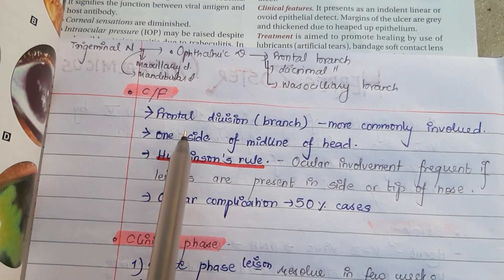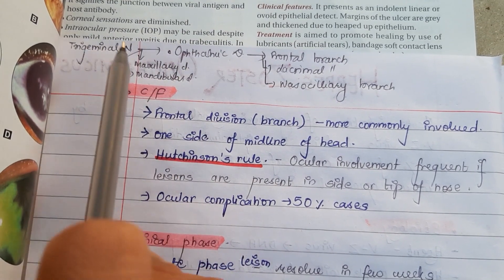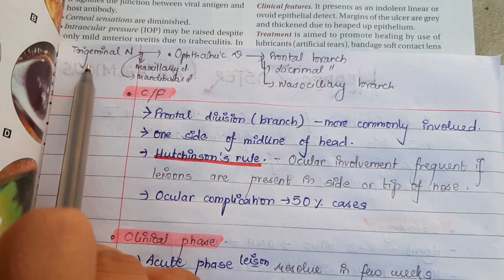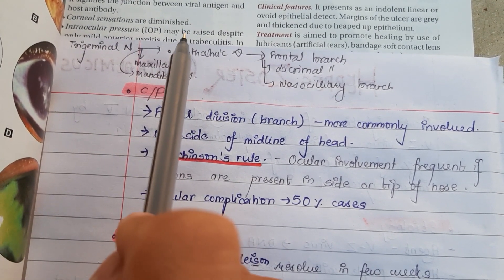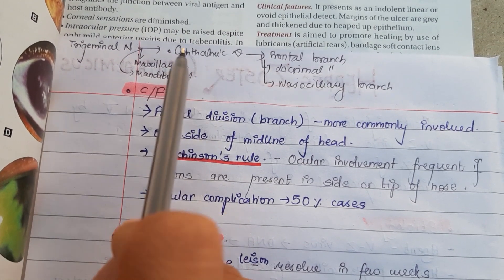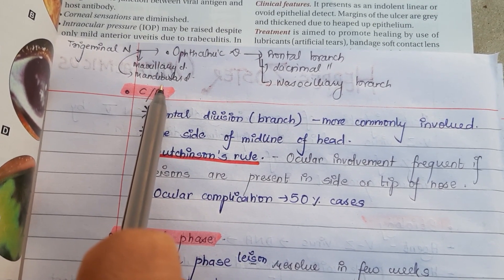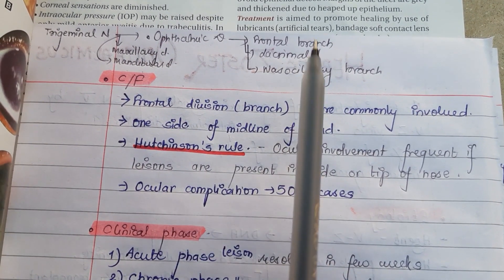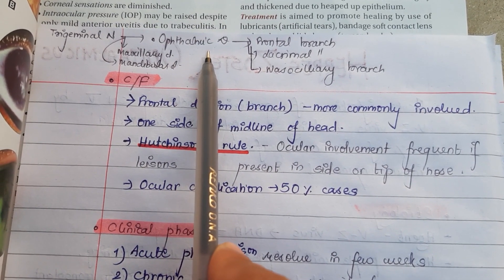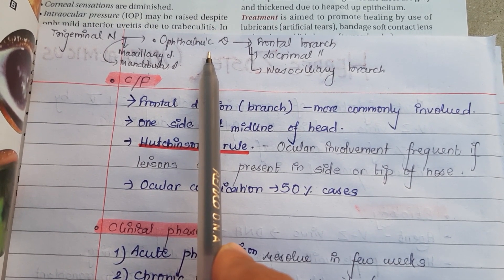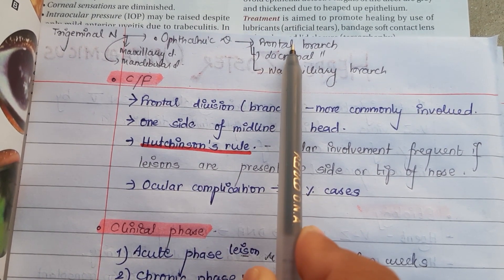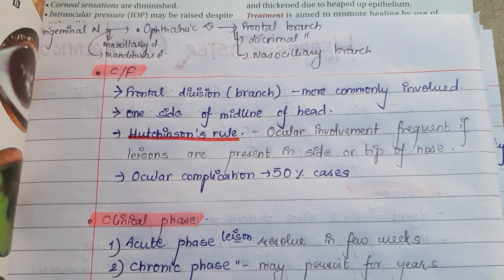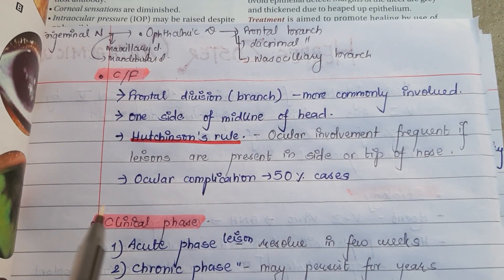The trigeminal nerve has three divisions: the ophthalmic division, maxillary division, and mandibular division. The ophthalmic division is further divided into three branches: the frontal branch, lacrimal branch, and nasociliary branch.